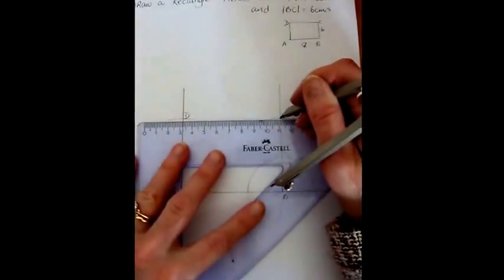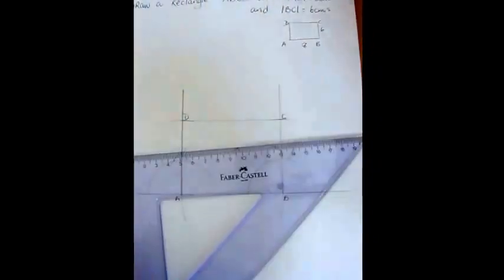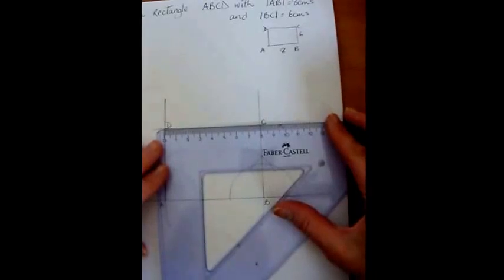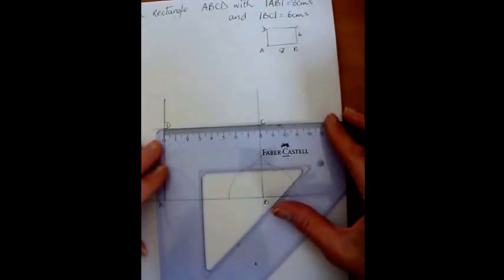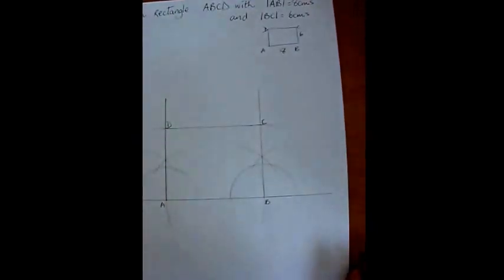I'm joining up C to D. And now when I check I can see C to D is 8cm long and now I've got my rectangle. Again notice I just used a compass and a straight edge.